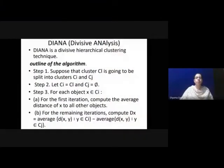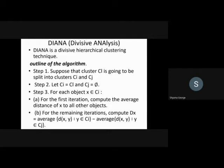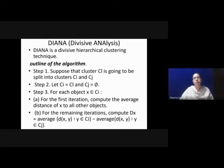DIANA is a divisive hierarchical clustering technique. The algorithm outline is as follows. In the first step, we assume that the cluster CL — the whole set of objects — is going to be split into clusters CI and CJ. For that, we assign CI as CL and CJ as the null set. Then, for each object X in CI, for the first iteration, we compute the average distance of X to all other objects.